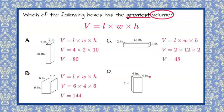Now let's look at the prism in D. We write down our formula: length times width times height. So 4 times 4 times 8. 4 times 4 is 16, and 16 times 8 is 128.